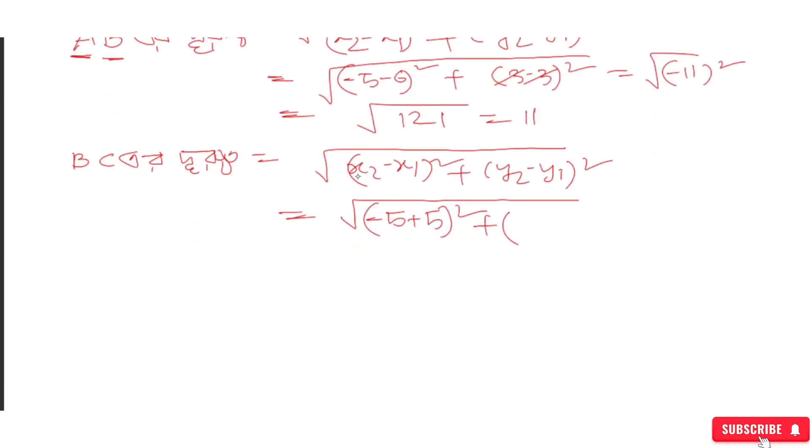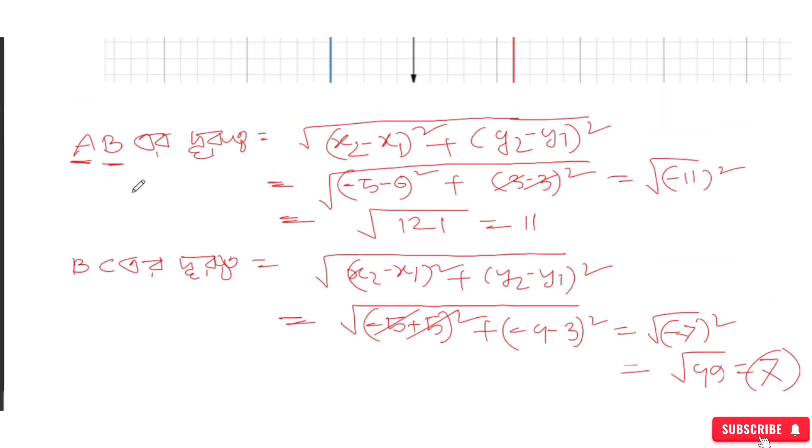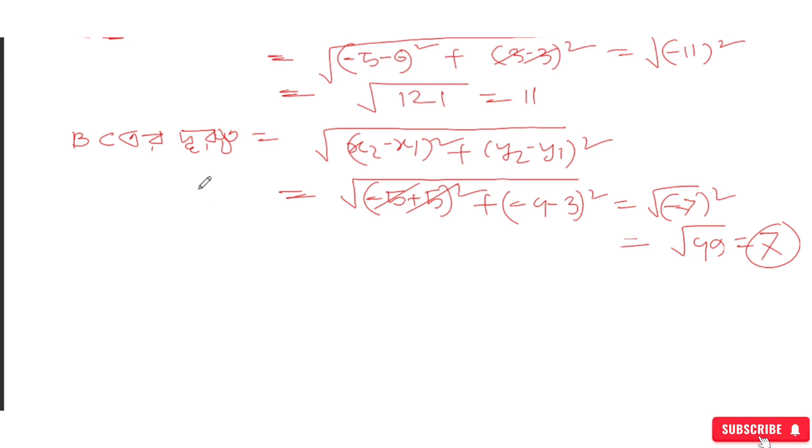For the y coordinates: minus 4 minus 3 equals minus 7. So we have 0 squared plus minus 7 squared, which gives us square root of 49.